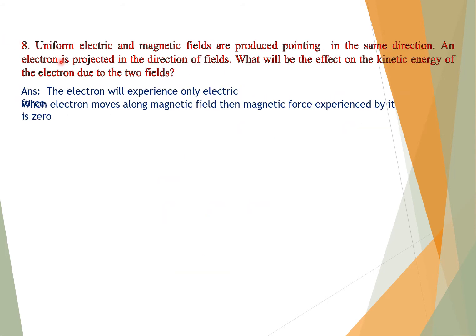Question number eight: Uniform electric and magnetic fields are produced pointing in the same direction. An electron is projected in the direction of the fields. What will be the effect on the kinetic energy of the electron? Answer: The electron will experience only the electric force. When the electron moves along the magnetic field direction, the magnetic force experienced by it is zero.